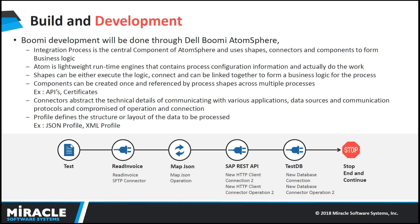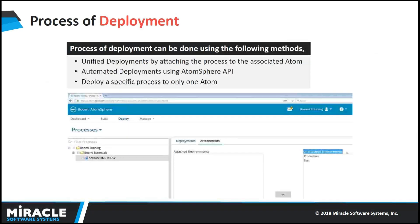Profiles define the structure of the data in the source profile or destination profile, and we import these profiles into the map shape. Deployment can be done by attaching a particular process to a particular atom on the deploy tab. For example, a contact XML/CSV process is attached to the test environment and deployed — that's a comprehensive deployment. For automated deployments, we can use the AtomSphere API to automate the process by calling the AtomSphere API.